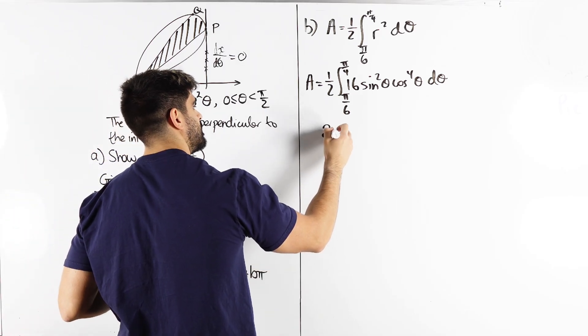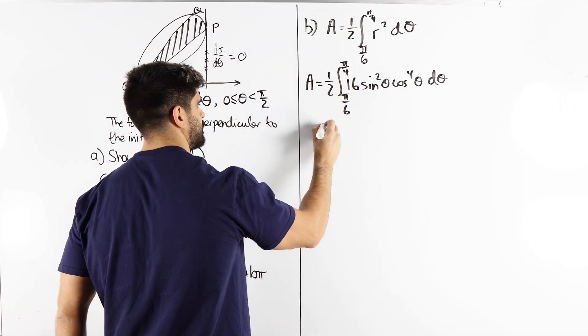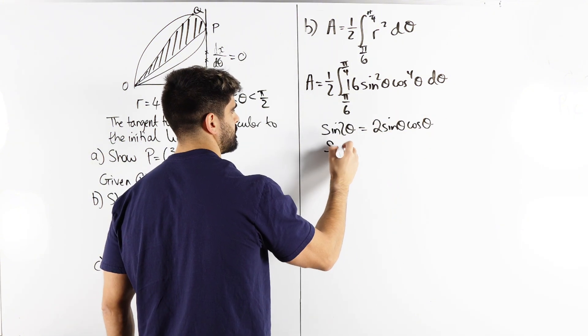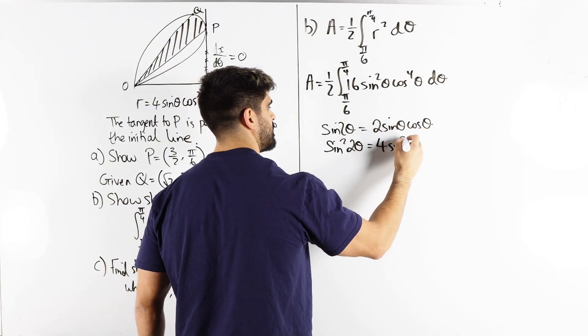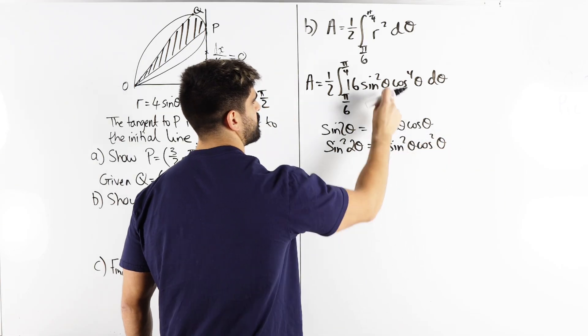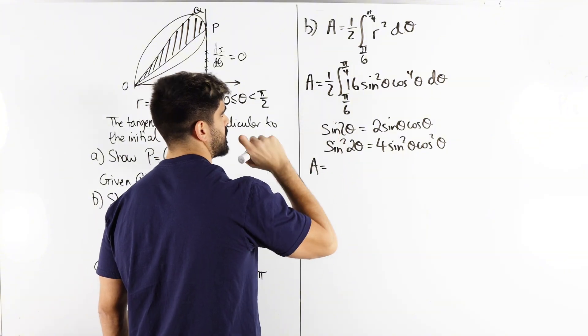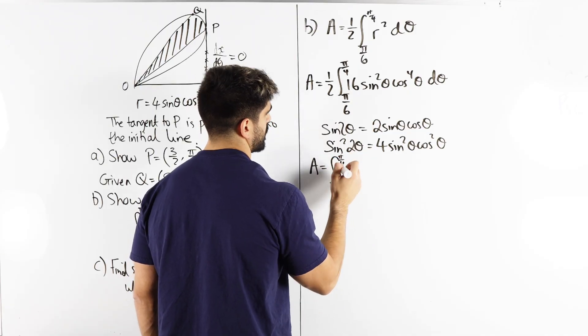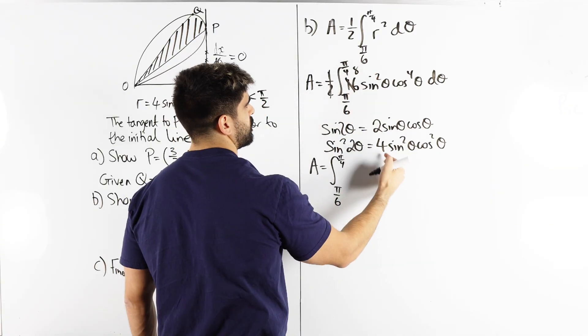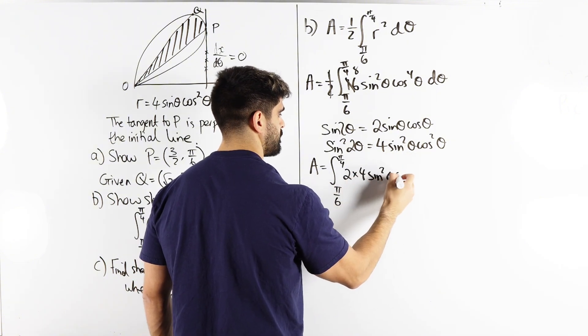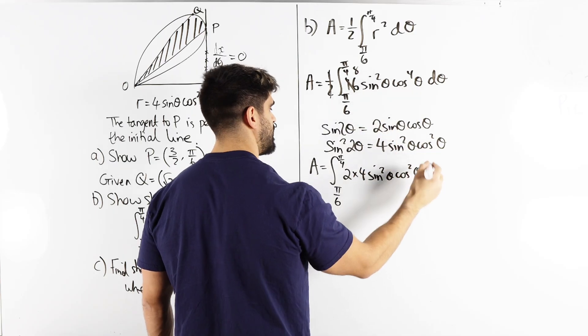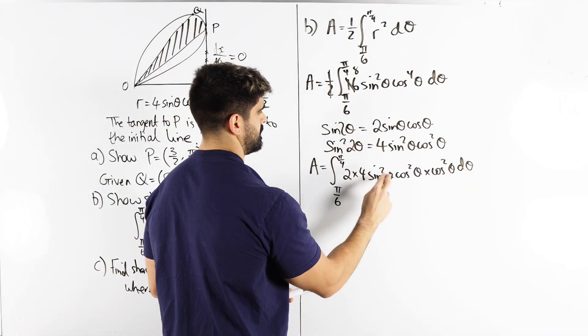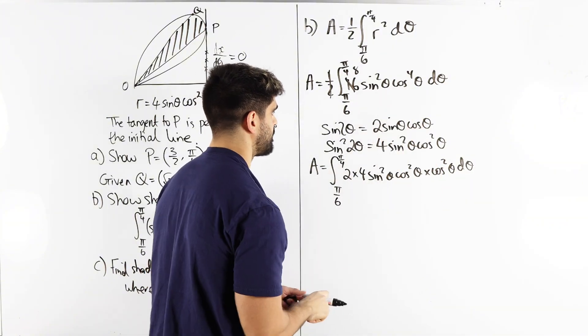So let's think about that sine squared two theta. I know sine two theta is two sine theta cos theta. So when I square that I get four sine squared cos squared theta. So if I can write that here. So my area is, should I just multiply in the half now to give me eight? So it's the integral between pi over six and pi over four. So that times that is eight but I want to make four. So it's two times four sine squared cos squared. But what would be left? Cos squared? So this gives me eight sine squared cos to the power of four. And that is my sine squared two theta.